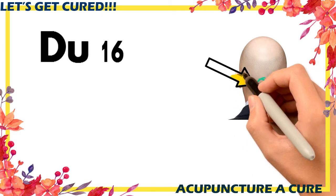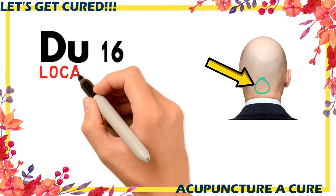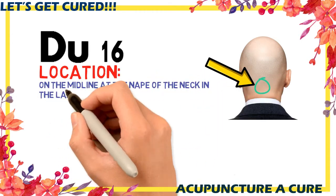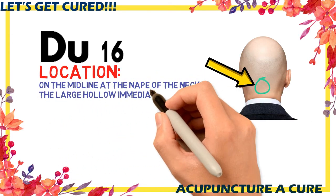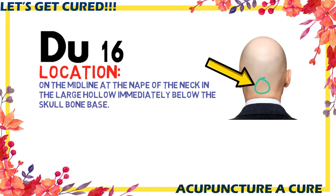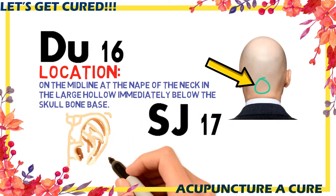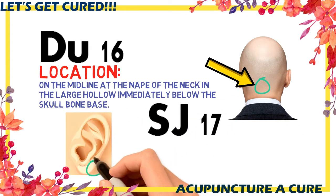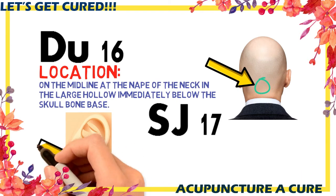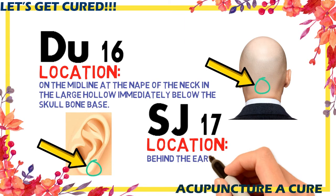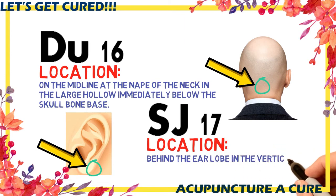Acupoint DU-16 is located on the back side of the neck, on the midline, at the base of the skull bone. Acupuncture Point SJ-17 is found in the vertical groove behind the ear lobe.